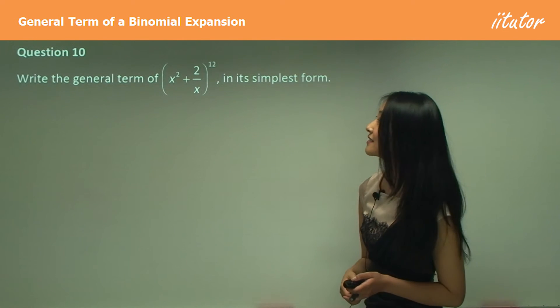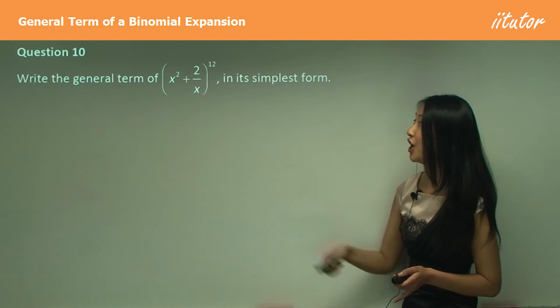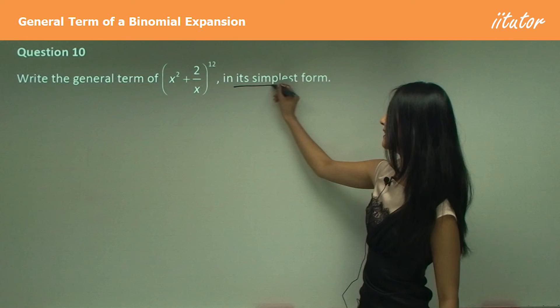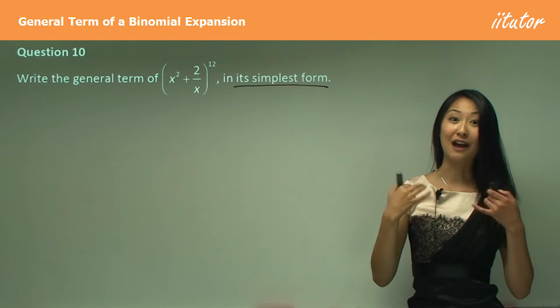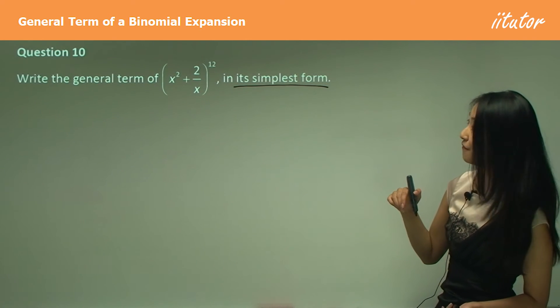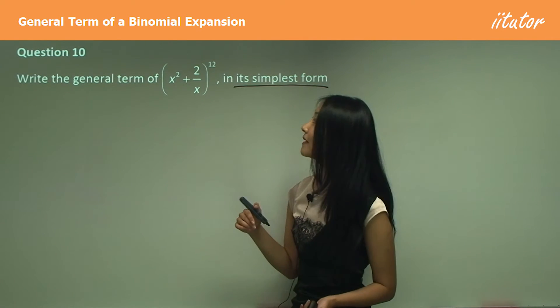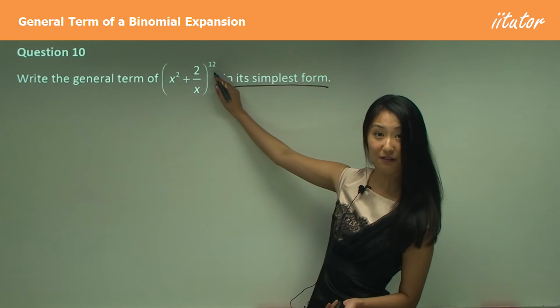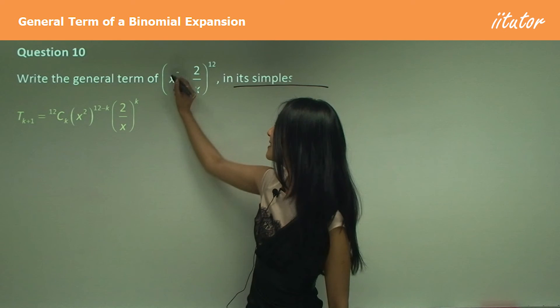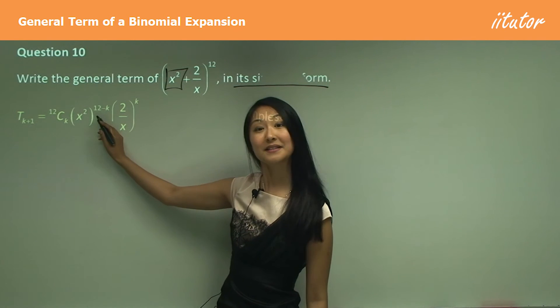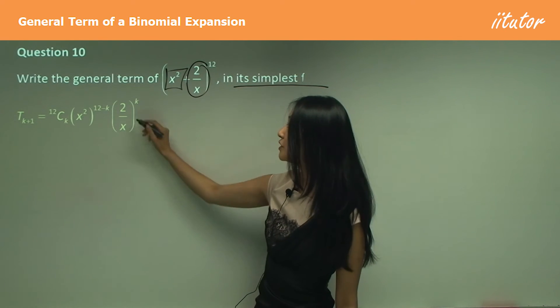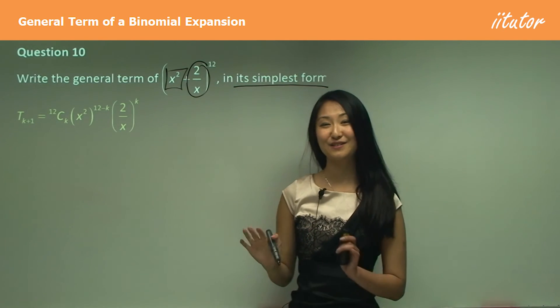Now, what about fractions? Let's practice writing the general term of this. And here, note how it specifies in its simplest form, which means we're probably going to have to simplify a little. So let's write the general term first. So T_{k+1} is going to equal to what? So that's 12. Yep, good. It's going to be 12Ck. This is our first term, so (x^2)^{12-k}. This is our second term, (2/x)^k. Super easy.